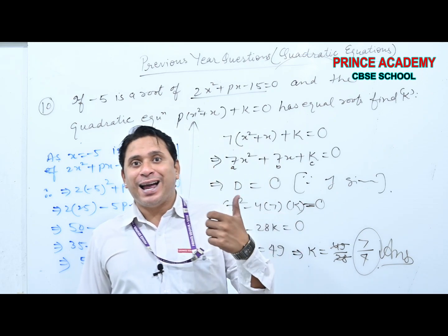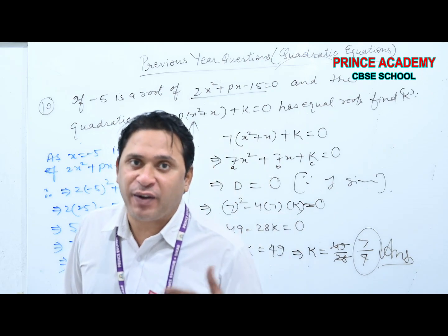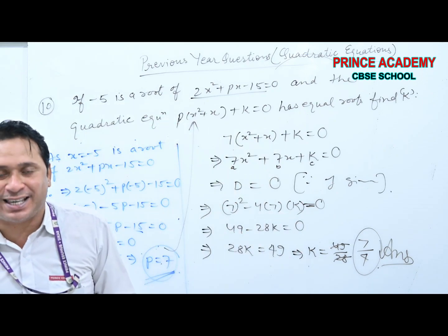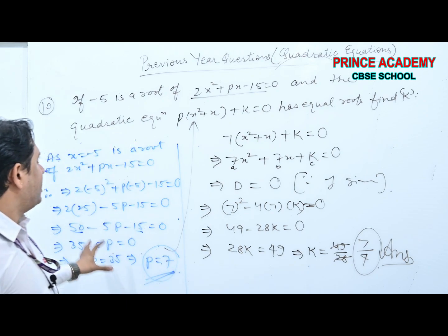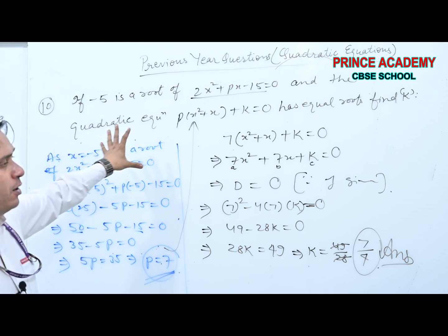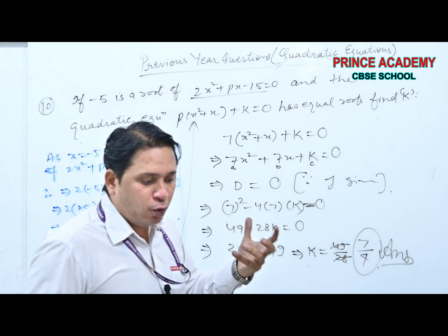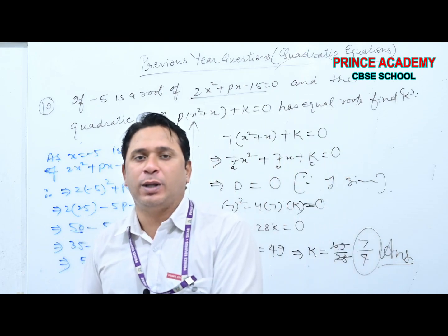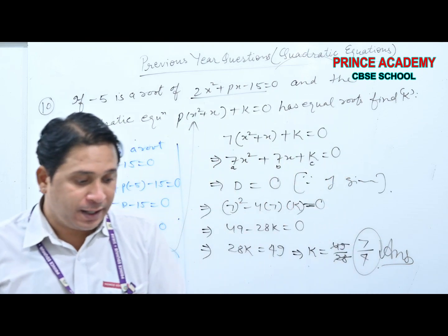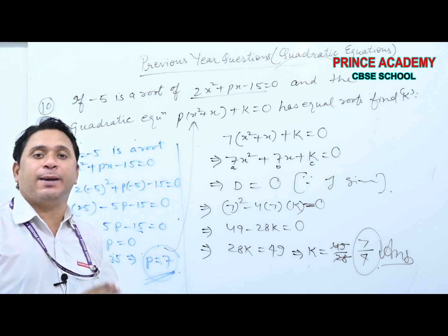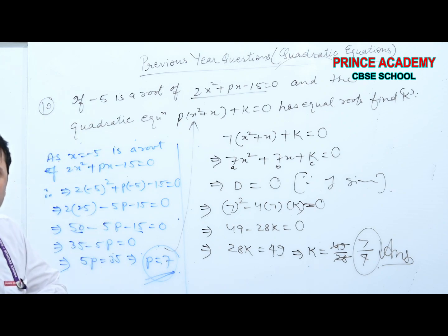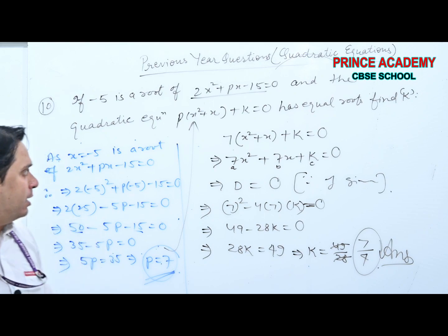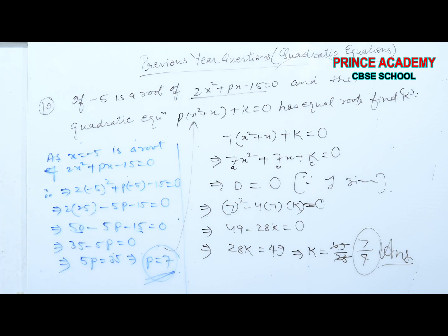Part 2: substituting p = 7 into the second equation gives 7x² + 7x + k = 0. Comparing: A = 7, B = 7, C = k. Since roots are equal, D = 0: 49 − 28k = 0, so k = 49/28 = 7/4.